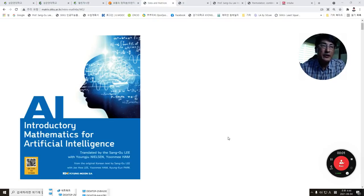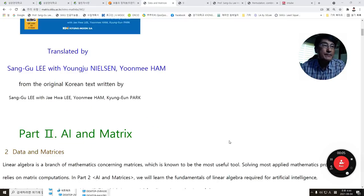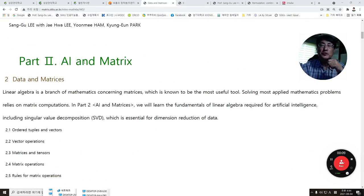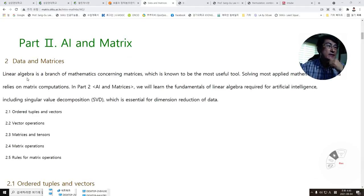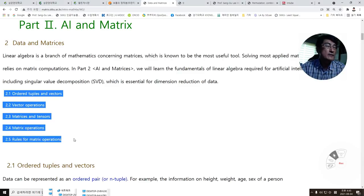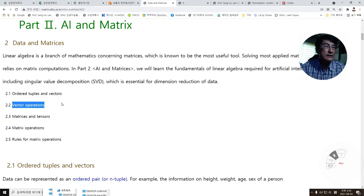Welcome to the second week of introductory mathematics for AI. In this week, we will start Part 2: AI and Matrix. This section will consist of five topics: ordered tuples and vectors, vector operations, matrices and tensors, matrix operations, and rules for matrix operations.